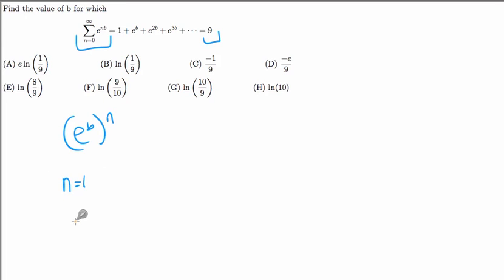When N is equal to 1, we have E to the B. When N is equal to 2, you have E to the B times E to the B. When N is equal to 3, you would have E to the B raised to the 3, which is the same thing as E to the B times E to the B times E to the B. So you can see here that each term is being multiplied by E to the B.